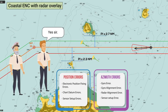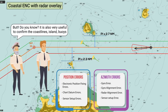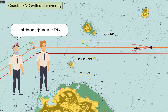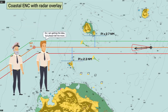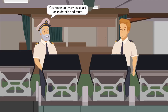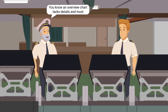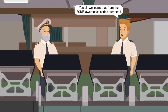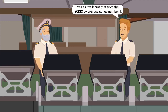Yes, sir. But do you know it is also very useful to confirm the coastlines, islands, buoys, and similar objects on an ENC? Sir, I am getting the idea but please tell me more. You know an overview chart lacks details and must never be used for coastal navigation. Yes, sir, we learnt that from the ECDIS Awareness Series Number One.